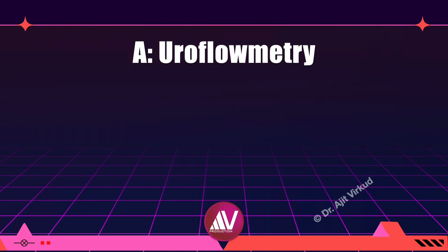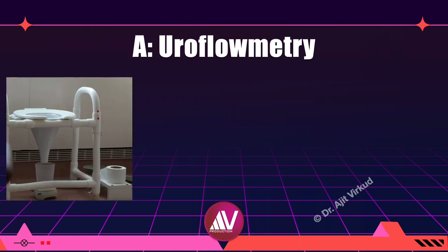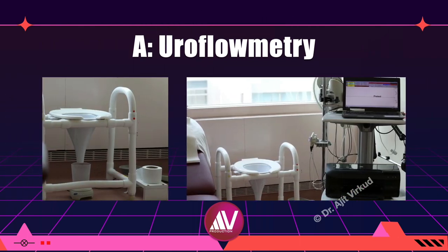Uroflowmetry is performed as follows. The patient with a full bladder voids into a special commode which measures the volume and flow rate of the urine passed. The attached computer then generates a graph of the same. She should be relaxed; the lab technician should go out of the room to give her privacy. She must not strain while voiding. She must pass at least 200 ml of urine for the study to be adequate.